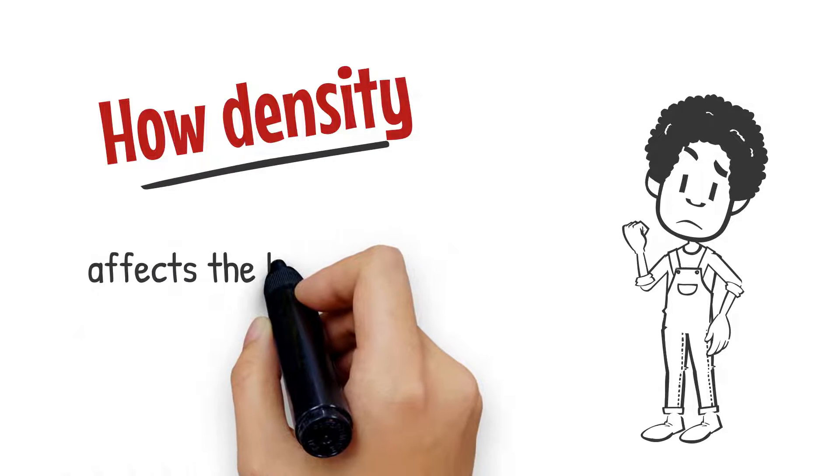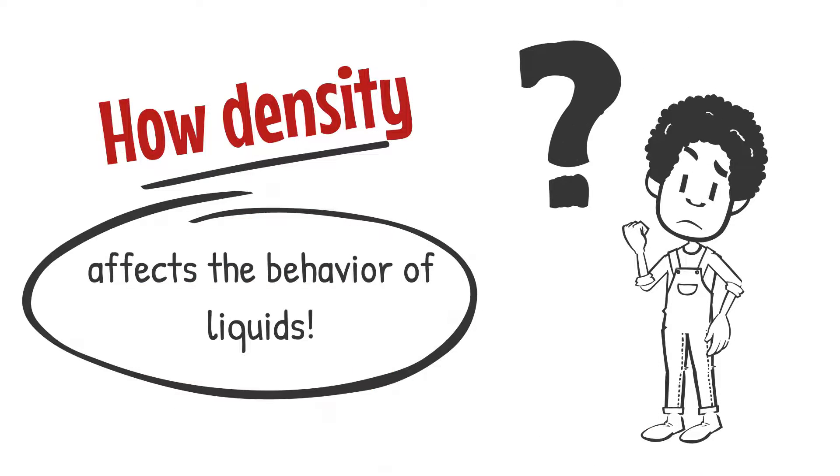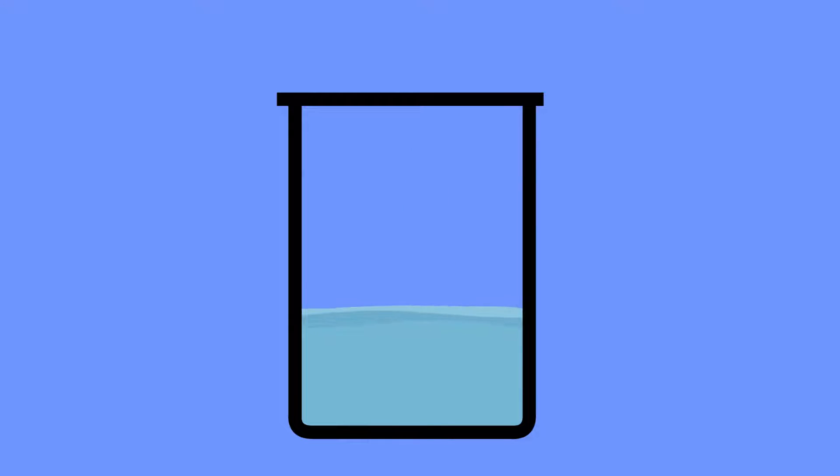So let's get ready to explore how density affects the behavior of liquids. In our lab today, we've set up an experiment where a student has poured equal amounts of water and cooking oil into a clear jar. Your task is to observe the interaction between the water and cooking oil after they have been combined in the jar.